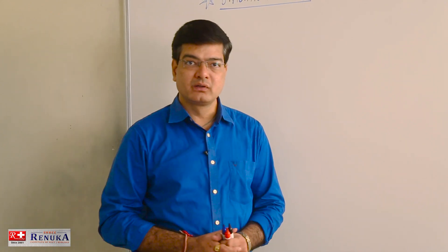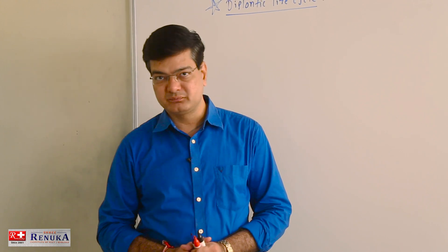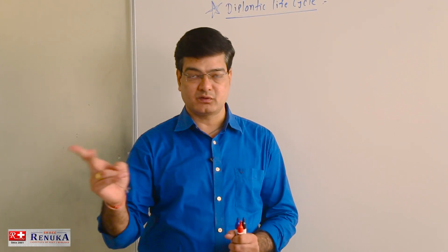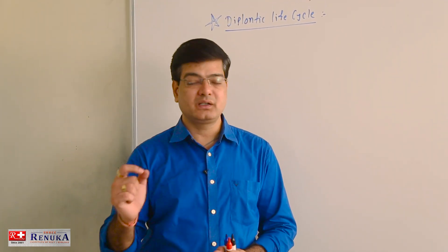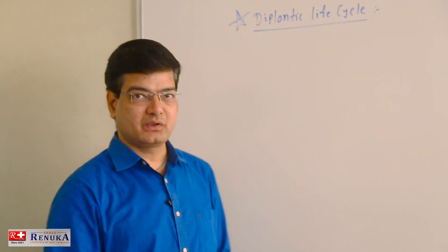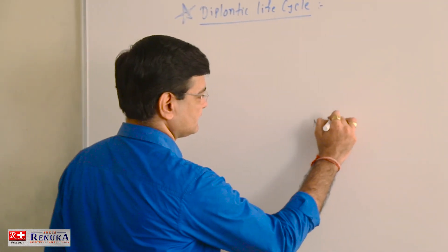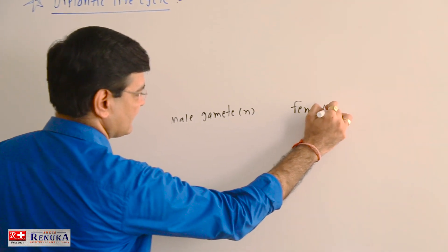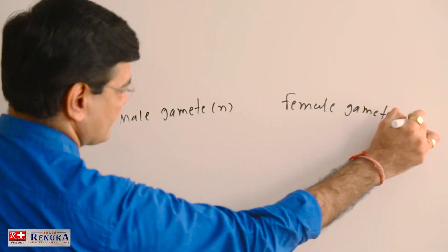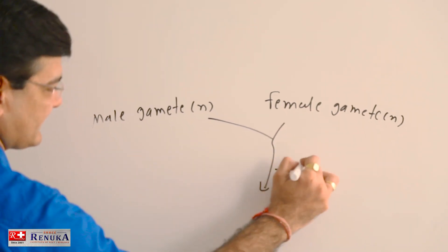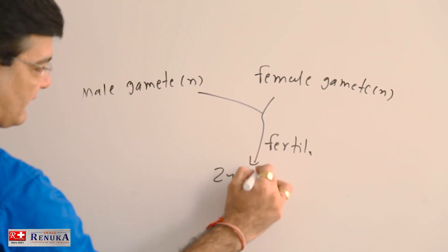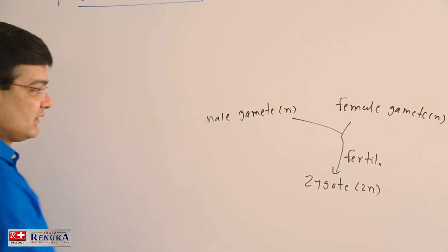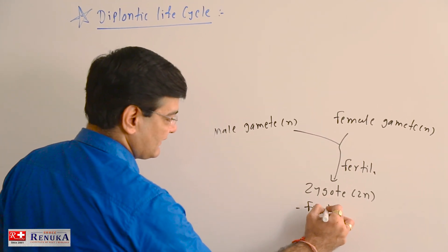The Diplontic life cycle is followed in the case of angiosperms and gymnosperms. Diplontic means the main plant body is diploid — two sets of chromosomes are found in the plant body. In the Diplontic life cycle, male gametes and female gametes undergo fertilization, and a zygote is formed. The zygote is always diploid, having two sets of chromosomes.